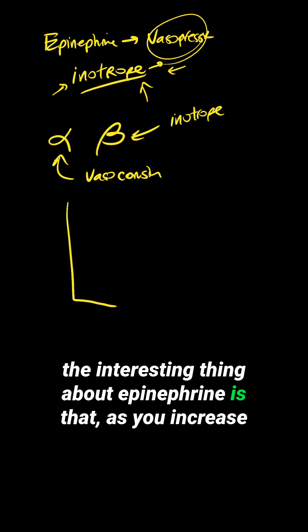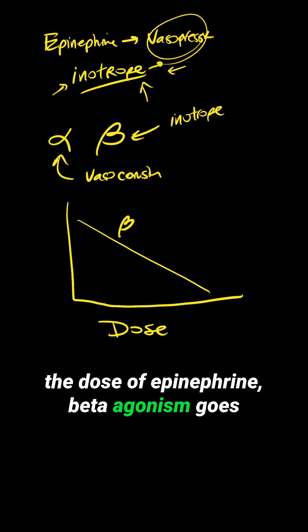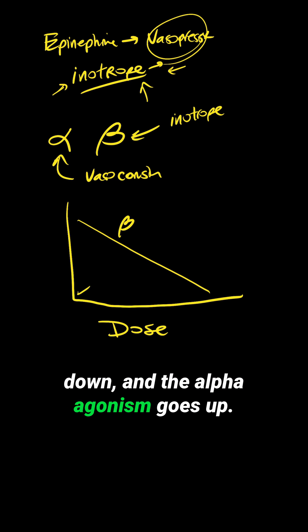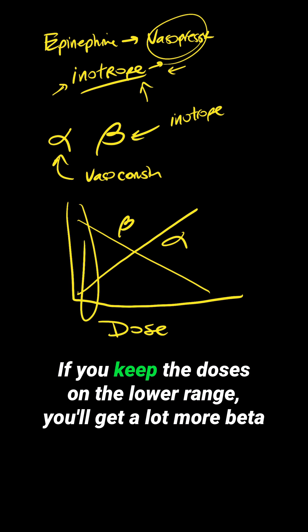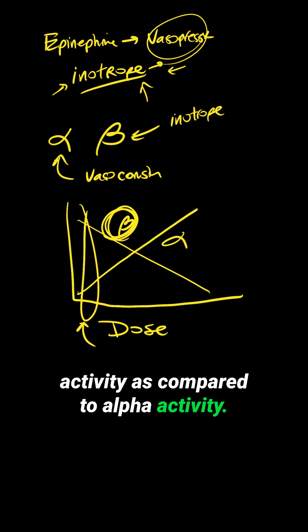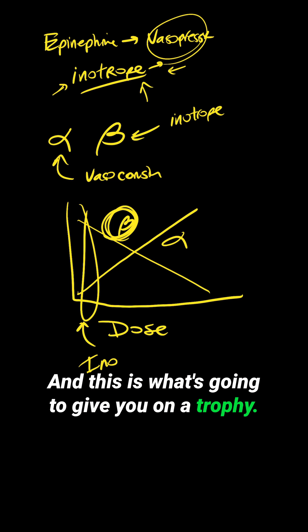The interesting thing about epinephrine is that as you increase the dose, beta agonism goes down and alpha agonism goes up. It's just an interesting property of epinephrine. If you keep the doses on the lower range, you'll get a lot more beta activity compared to alpha activity, and this is what's going to give you inotropy.